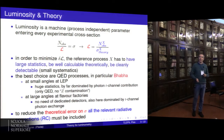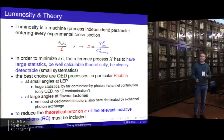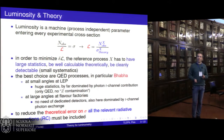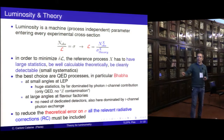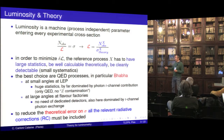There is no need to explain too much why Bhabha scattering is important at any e+e- machine for luminosity monitoring. At LEP, the golden process chosen for luminosity monitoring was Bhabha scattering in the small-angle regime, because it was a purely QED process so you could calculate the radiative corrections very precisely. At the flavor factories, Bhabha scattering is used at large angles, and also in this case it is dominated by the t-channel exchange contribution.